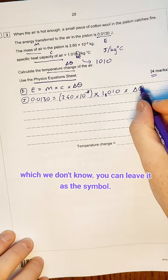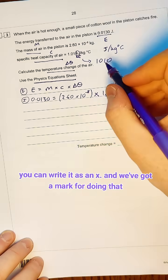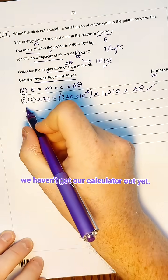Times by the temperature change, which we don't know. You can leave it as the symbol, you can write it as an X. And we've got a mark for doing that and a mark for doing that. We haven't even got our calculator out yet.